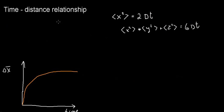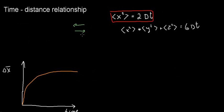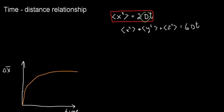Now we're going to talk about a very important idea: the time-distance relationship in diffusion — super, super important. Right off the bat I'll highlight this equation, which you need to know because it's in the minimals. It says: distance squared equals the diffusion coefficient times time, in one dimension. The reason we use distance squared is that if a molecule travels +2 in one direction and -2 in another, they cancel to zero, so we square the distance instead.